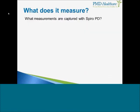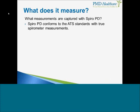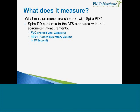SpiroPD captures several different measurements and they all conform to the American Thoracic Society standards. It measures FVC, which stands for Forced Vital Capacity — the total amount of air that you can expel from your lungs after you take a deep breath. It measures FEV1, which is forced expiratory volume in the first second — that's how much air you can expel from your lungs just within the first second of your breath. It also measures FEV1/FVC, the ratio between the two, comparing how much air you've breathed out in total with how much air you've expelled in just that first second.